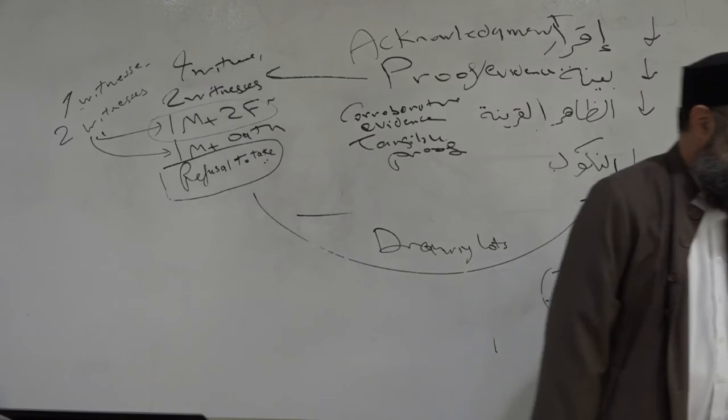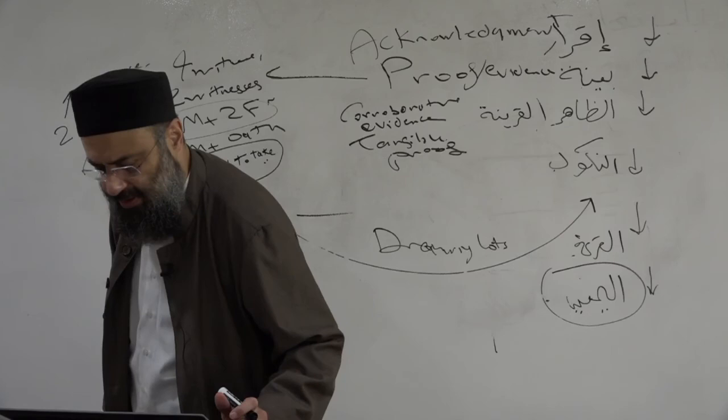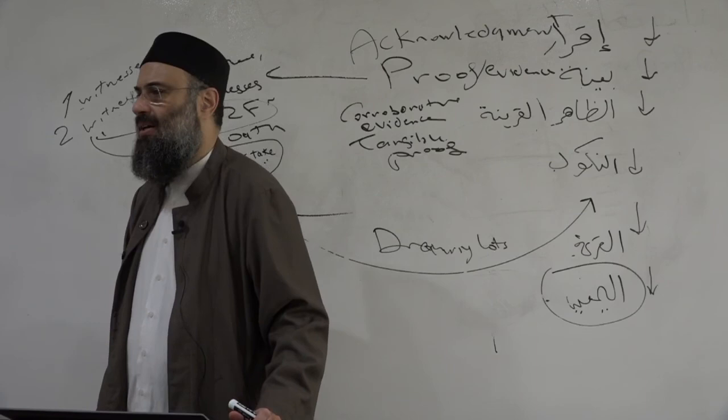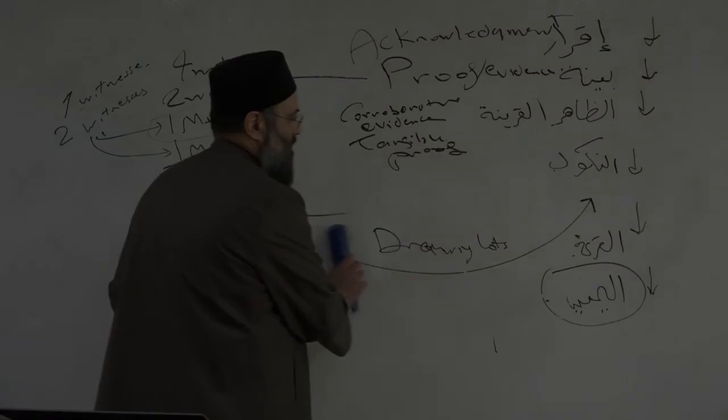That brings us to the end of the chapter on conflicting evidences. The next chapter, which we will cover shortly, is the chapter on correspondence of judges — kitabat al-qudah.